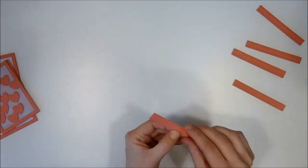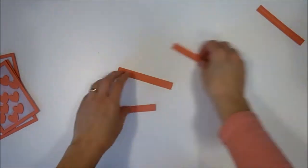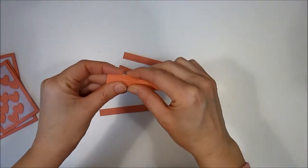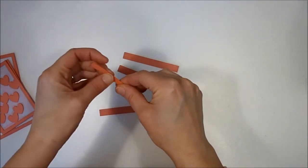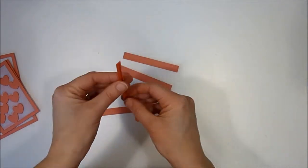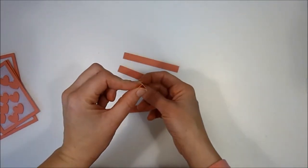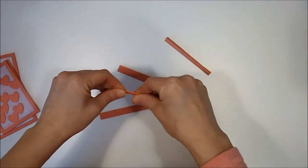Each of these I'm just going to use my fingers just to score, and you don't have to crease them super hard. You actually want them to stay at about a 90-degree angle as they hold your luminary together, but I'm going to crease each one.